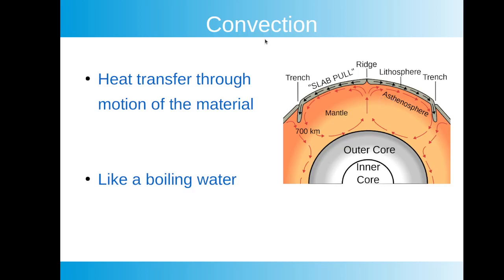If you look up a definition of convection, it's the heat transfer through the motion of material. The most common example is like a pot of boiling water where you can actually watch the water roll in this rolling boil as you heat the bottom and that heat comes up through the edges.